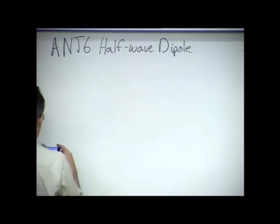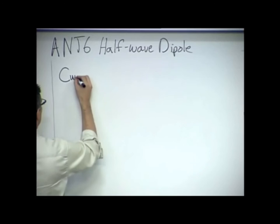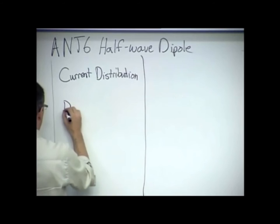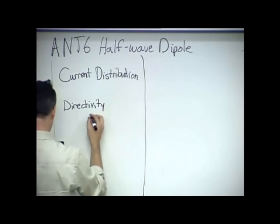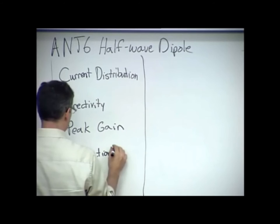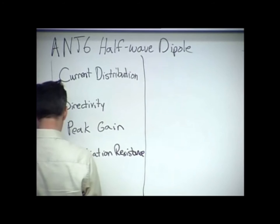And what we're going to do, we're going to make a chart like this. It's going to have current distribution, directivity, peak gain, radiation resistance, and finally half-power beam width.